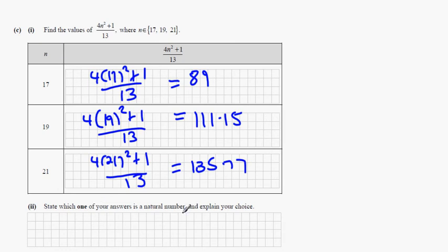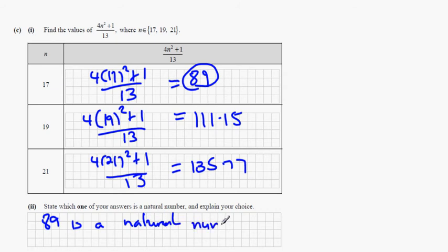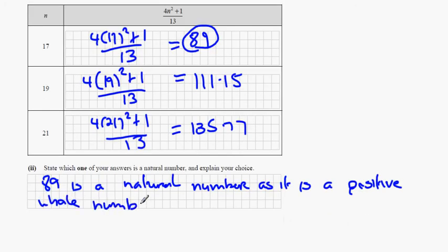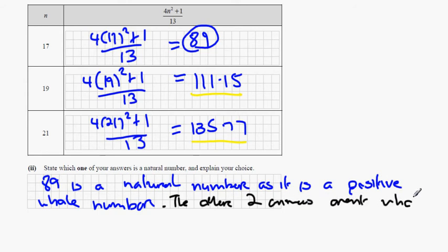State which one of the answers is a natural number and explain your choice. 89 is the natural number as it is a positive whole number — it's not a fraction or decimal. The other two answers aren't whole numbers, as you can see these two answers here aren't whole numbers.